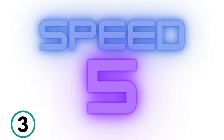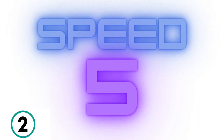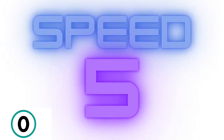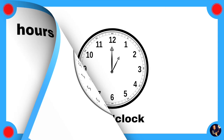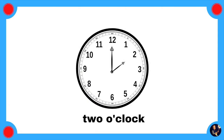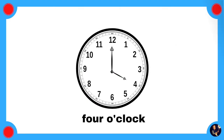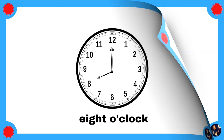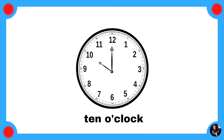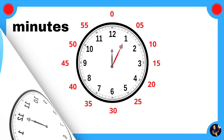3, 2, 1. Hours: 1 o'clock, 2 o'clock, 3 o'clock, 4 o'clock, 5 o'clock, 6 o'clock, 7 o'clock, 8 o'clock, 9 o'clock, 10 o'clock, 11 o'clock, 12 o'clock.